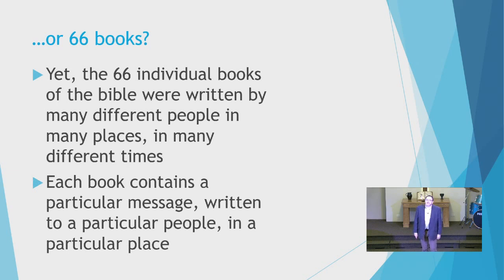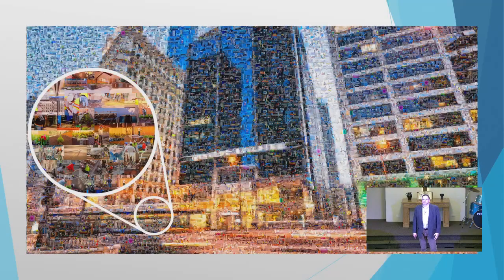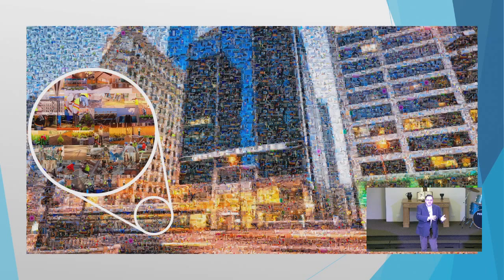Each book then contains a particular message, and it's written in a particular context to a particular people in a particular place. So if you're reading a message that was written to the Ephesians or the Philippians or the Thessalonians, you need to understand who those people were and what their issues and their particular problems were. All of these different books—poetry, wisdom literature, prophetic books of the Old Testament, historical narratives, law, gospel messages, apocalyptic literature of Daniel or Ezekiel or Revelation—each one of these books has its message.